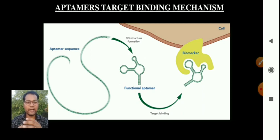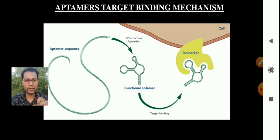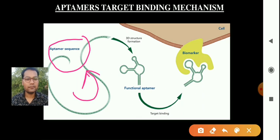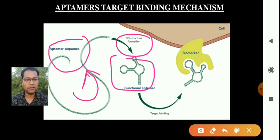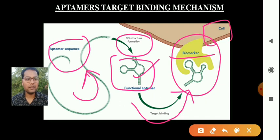Let us now understand the concept of aptamer target binding mechanism. Here is the aptamer sequence, which forms a 3D structure. This is a functional aptamer and it binds to a target binding site. This process happens in the cell.